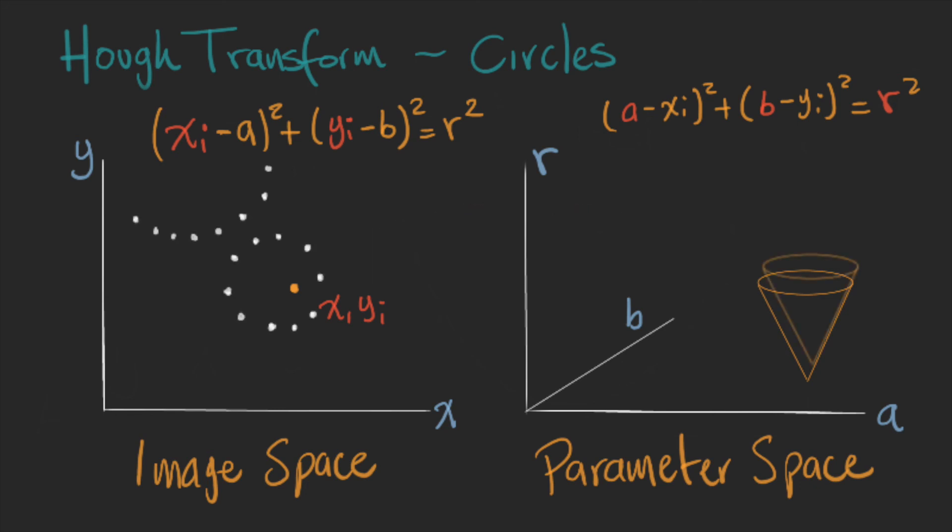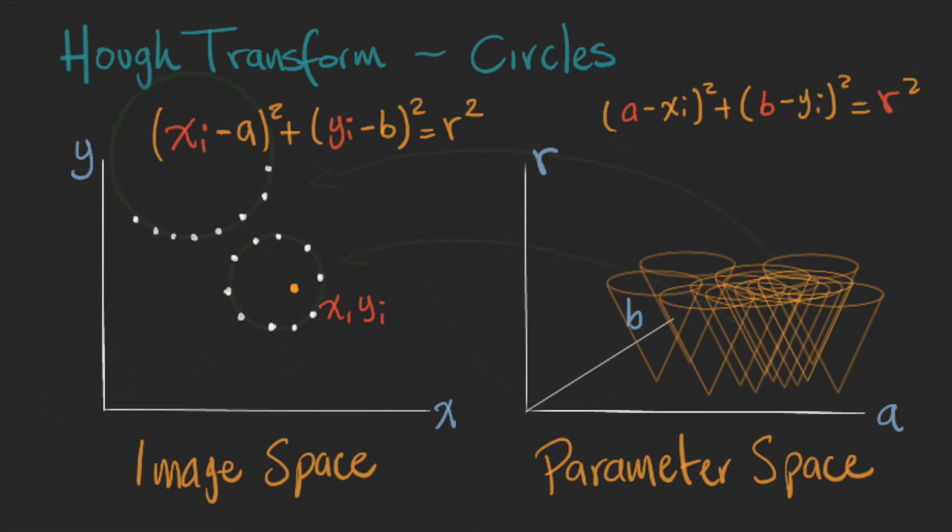Then each point in the image space will create a cone in the parameter space. There will be several cones, and you might find several intersections at different levels, but once you get the peaks, you will get the circles with more points that fit each equation.